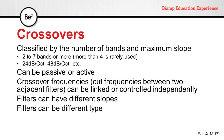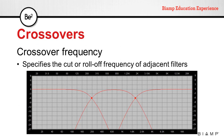Crossover frequencies — the cut frequencies between two adjacent filters — can be linked or controlled independently. The crossover frequency defines the cutoff or rolloff frequency of adjacent filters. Some crossovers with more control offer the possibility to unlink adjacent filters, which allows us to control the cut frequencies separately.